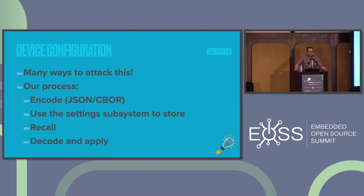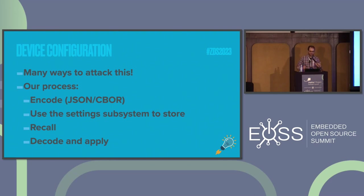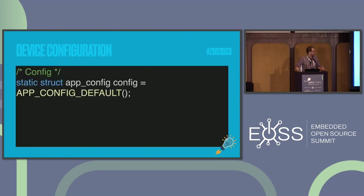Let's change gears and talk a little bit about device configuration. There are many different ways to attack this. What I do currently is encode the data payload to the settings subsystem — it's a key-value store, really easy to use. I typically use CBOR, but you can use JSON — they're interoperable, which is nice. You can set it, then retrieve it from the settings subsystem usually on boot, then decode it, apply it, and check for differences.